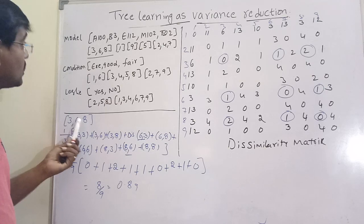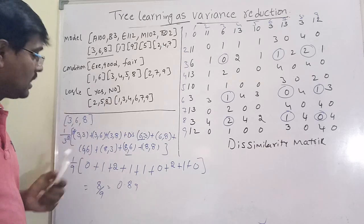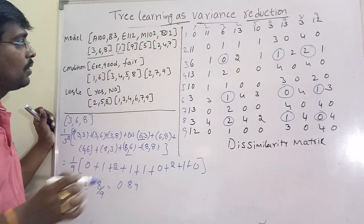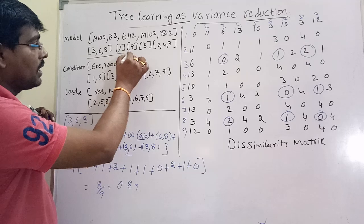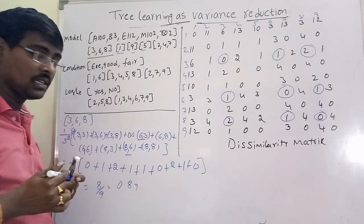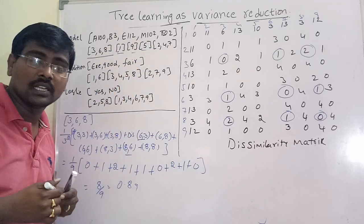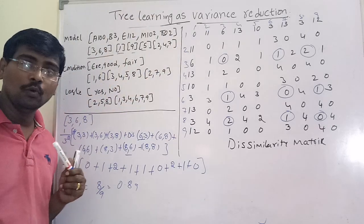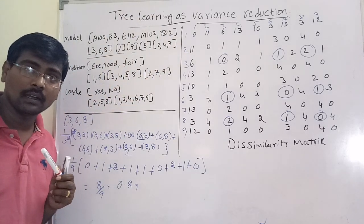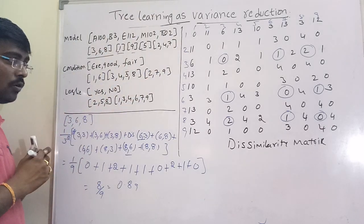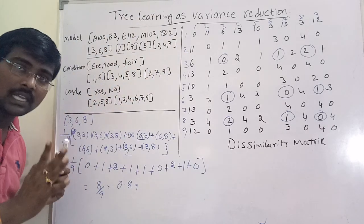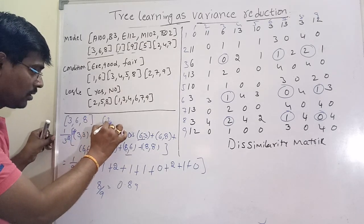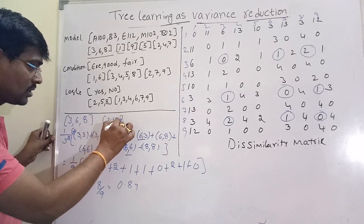For nodes with only a single value — 1, 9, and 5 — the dissimilarity is 0 since there's only one element. Similarly, calculate for {2, 4, 7} using the same procedure: form all combinations — (2,2), (2,4), (2,7), (4,2), (4,4), (4,7), (7,2), (7,4), (7,7) — and look up all values from the matrix. By computing this, we get a value of 0.22.